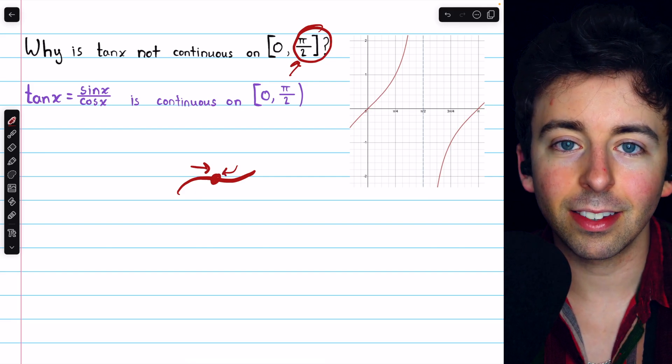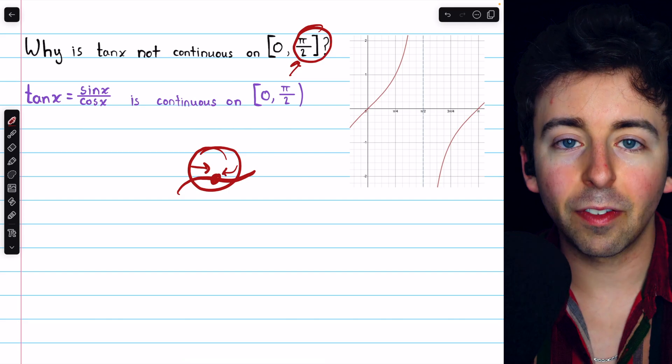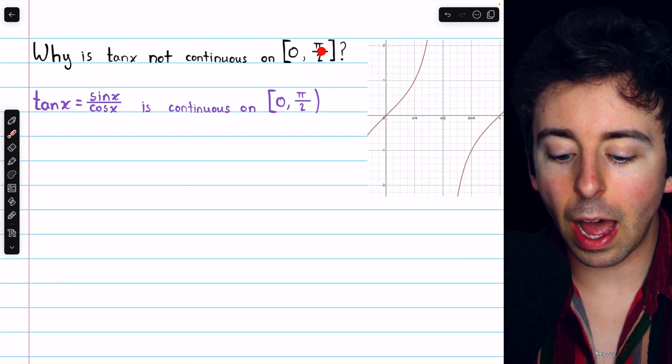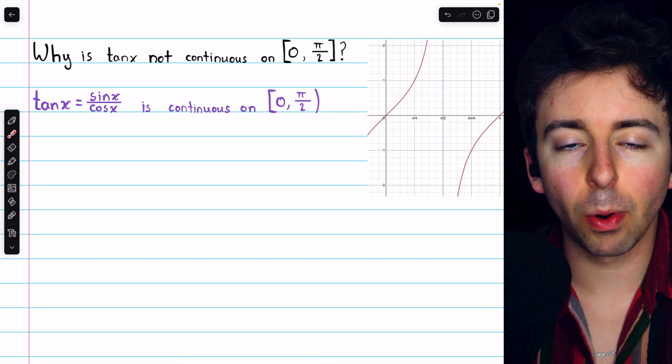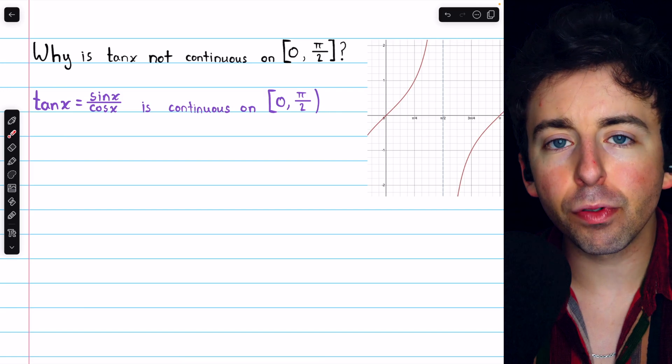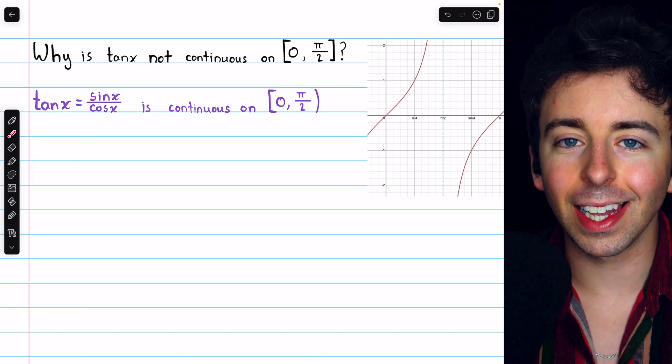And when a limit exists, approaching from the left and approaching from the right have to have the same limits. But on this interval, because pi over 2 is the right endpoint, we only have to consider the limit of the tangent function as it approaches pi over 2 from the left.